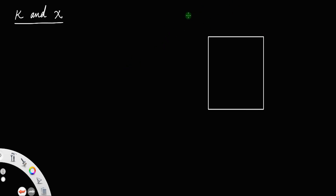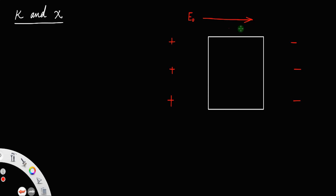When you apply an external field E₀ from left to right — that is, there is a huge positive charge on one side and a huge negative charge on the other — the electric field is always from positive to negative, so E₀ is from left to right.